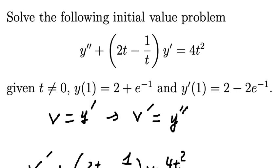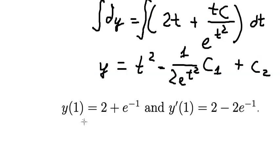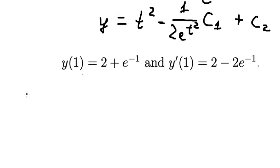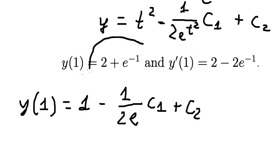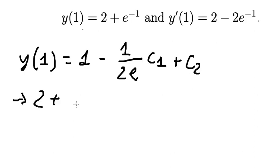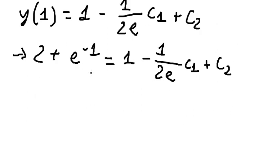When t equals 1, y equals 2 plus e to the power of negative 1. So I will substitute t equals 1 on both sides. One squared gives 1. We put 1 in the expression, and we get negative 1 over 2e, plus C1 plus C2. We change y(1) by this value. Simplifying, 2 and 1 cancel and we get 1.